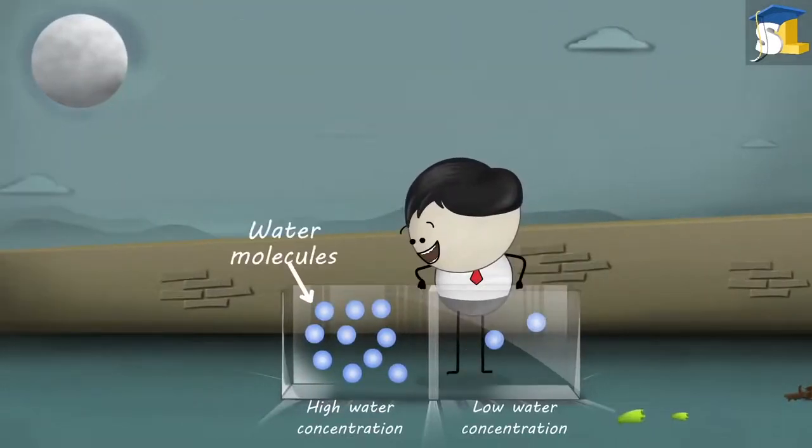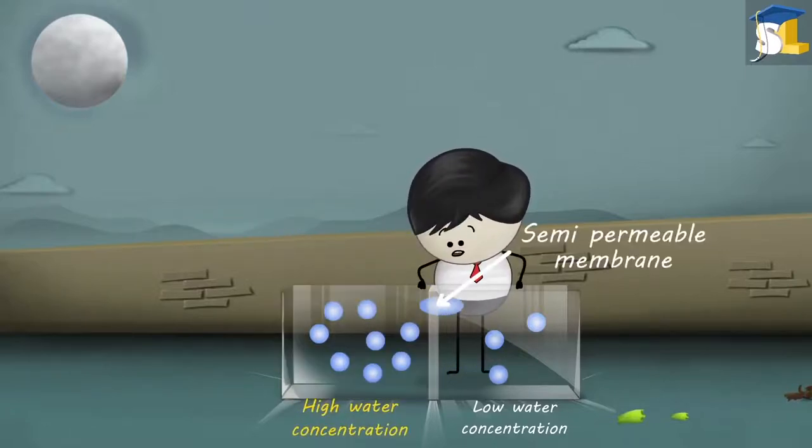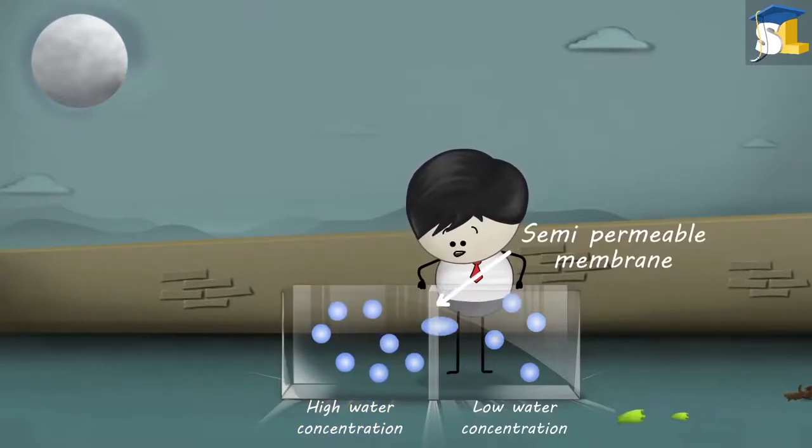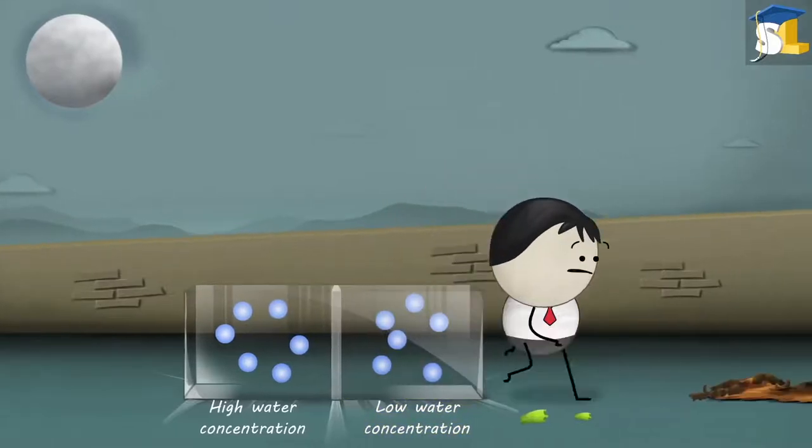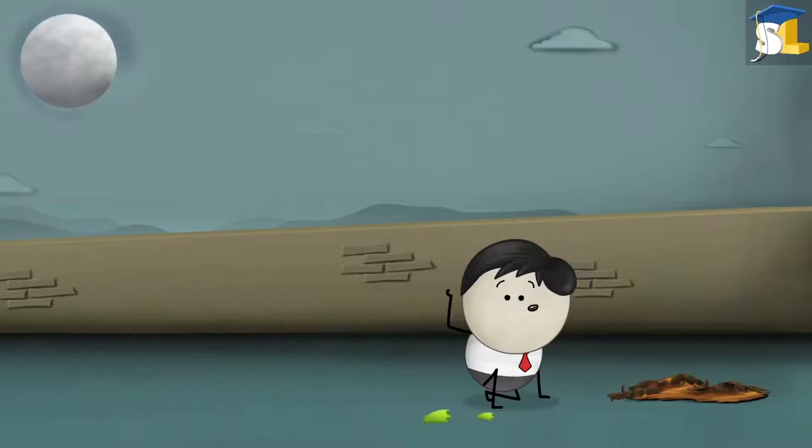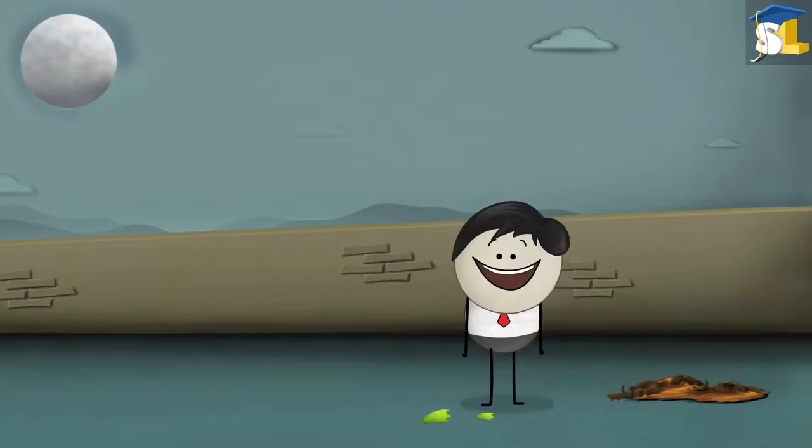Osmosis is the diffusion or movement of water molecules from a region of higher concentration of water through a semipermeable membrane to a region of lower concentration of water. Do you think osmosis took place when we sprinkled salt on the grass? Bingo. You are right.